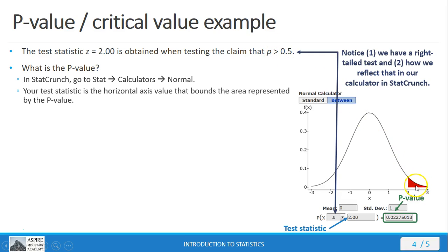So, it's that right tail that's our region of rejection, and the p-value is that area that's bounded by the test statistic, and that's what we see here in the calculator.